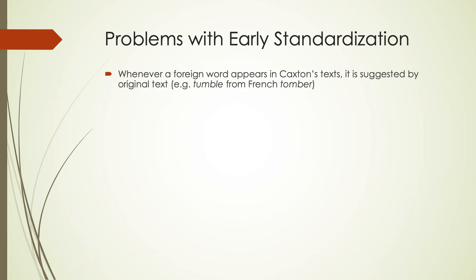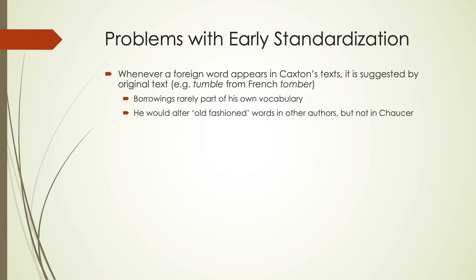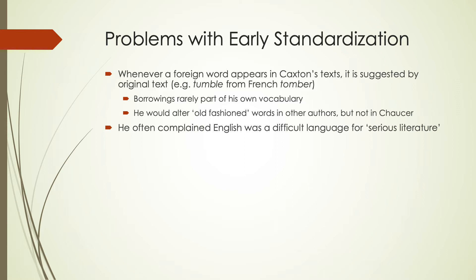When Caxton was putting foreign words into text, it was suggested by the original text — for example, we see 'tumble' coming from French 'tomber.' Borrowings were rarely part of his own vocabulary, so he would alter some old-fashioned words in other authors but wouldn't change them in Chaucer's writings. He would often complain that English was a difficult language for serious literature. This was an anxiety of the time — that English didn't have the kind of power at the beginning of the printing press, and wasn't seen as a serious language for writing in the same way that Latin would have been.